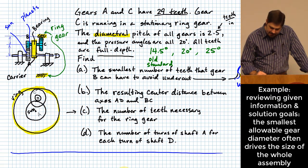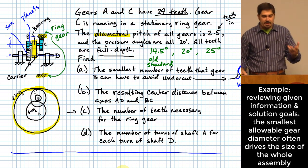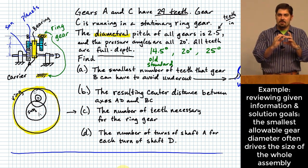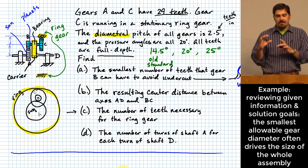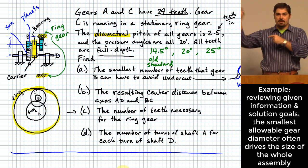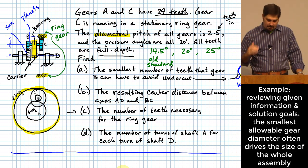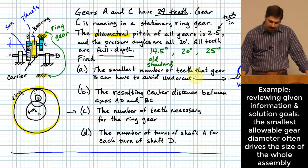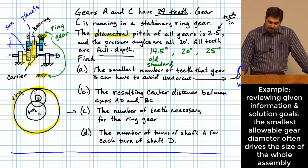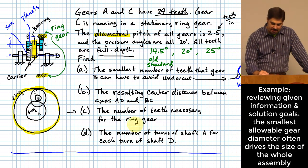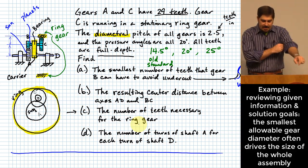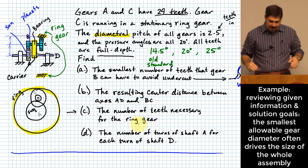A designer often wants to make a gear train as compact as possible, but there's a minimum size for at least one gear that drives everything else. Once we find the smallest number of teeth that avoids undercut for gear B — given we've already specified 29 teeth for gears A and C — that allows us to set things like the number of teeth for the ring gear. We'll also need the resulting center distance between axes AD and BC.